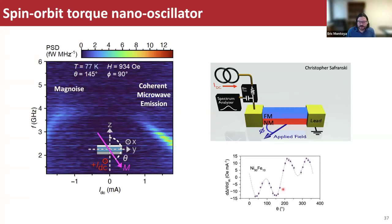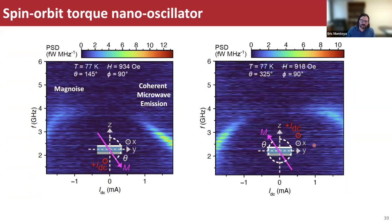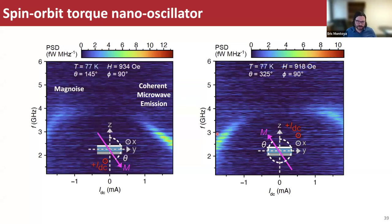According to this symmetry, under magnetization reversal we would expect the torque to change sign — and that's exactly what we observe. When we rotate the magnetization by 180 degrees, the sign of the torque changes: for positive current it's now additional damping, and for negative current it becomes anti-damping.